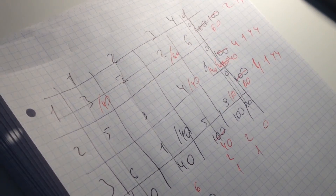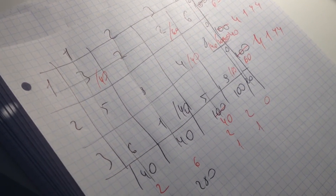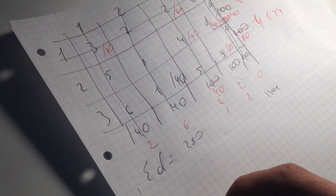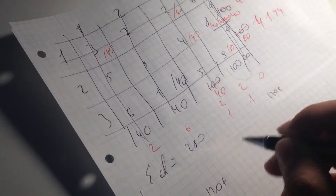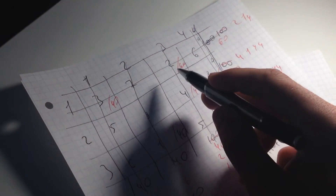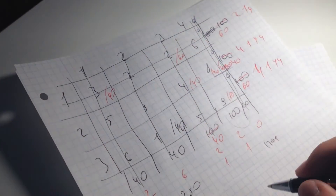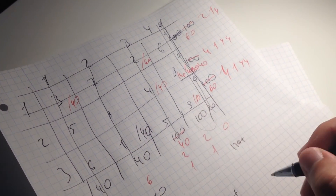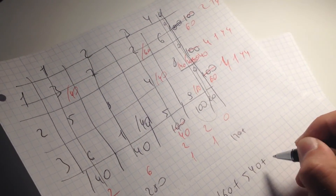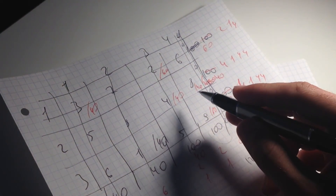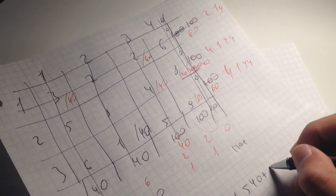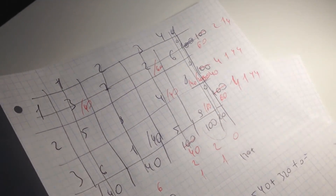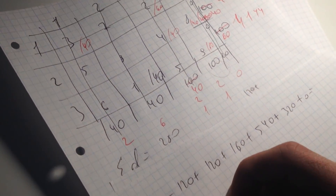Now we have to calculate the total cost. The total cost is: 120, plus another 120, plus 40 times 4 is 160, plus 9 times 3 is 450 (should be noted as the relevant cell cost), plus 40 times 8 is 320, plus 20 times 0 is 0. In total, the cost is 1,000.